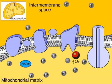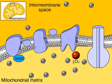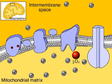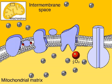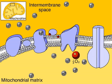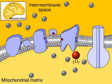NADH gives up its high-energy electrons to the first complex in the electron transport chain. The electrons move from one member of the chain to the next, giving up their energy as they are pulled from NADH toward highly electronegative oxygen. The energy given up by the flow of electrons is used to pump hydrogen ions from the mitochondrial matrix into the intermembrane space.